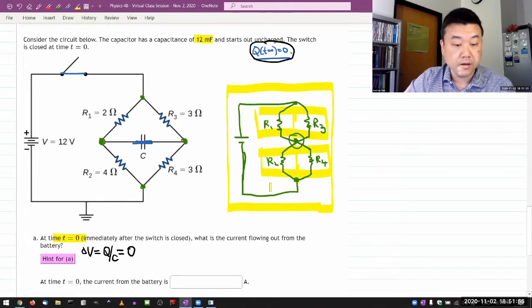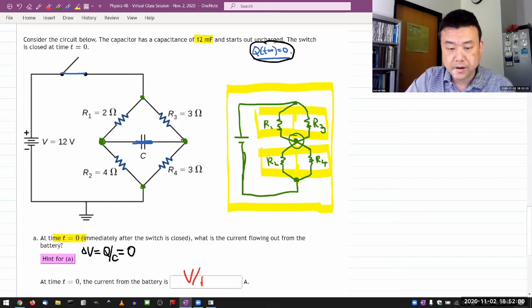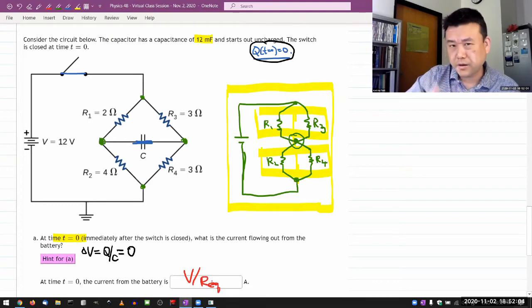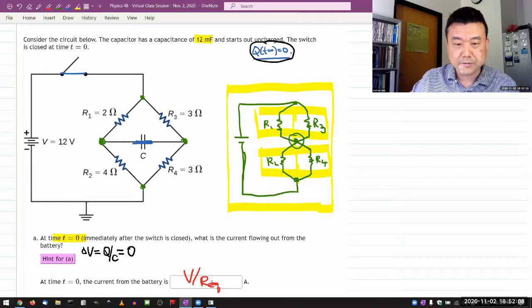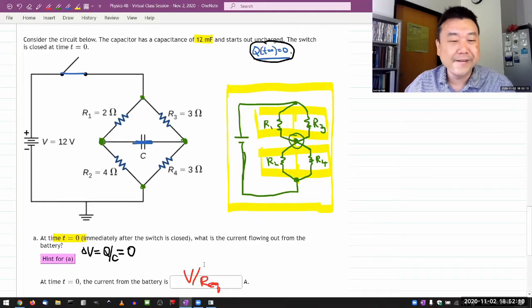And your current from the battery will be simply the voltage of the battery divided by the R equivalent, where I'm going to assume you can work out the equivalent resistance - takes some more algebra than I want to do right now.